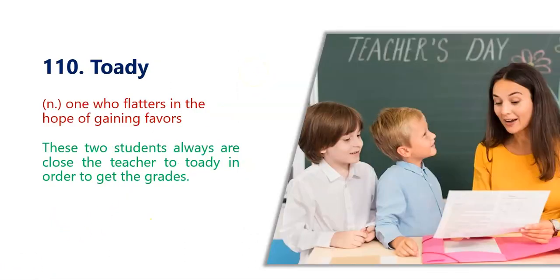The last word in this word list is toady — one who flatters in the hope of gaining favors, meaning flattering someone or buttering someone to gain something from them. These two students always stay close to the teacher as toady in order to get the grades. In this picture we can see two students trying to become close to the teacher, maybe to gain good grades. That's it for today. Thank you so much.